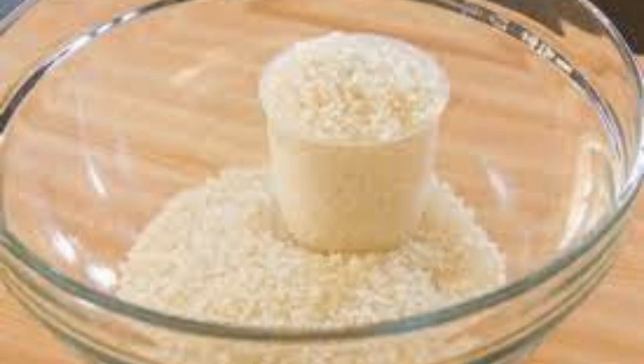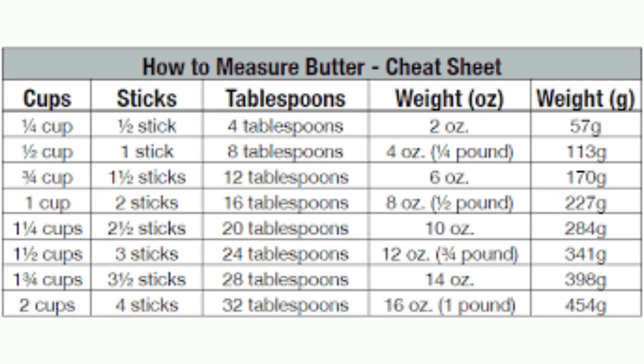One cup (240 ml) of uncooked rice will generate anywhere from one and a half cups (360 ml) to three cups (720 ml) of cooked rice. A quarter pound of butter is equal to a half cup in US measurements. In the British Imperial system, this is 0.42 cups or 118.29 milliliters.